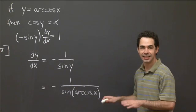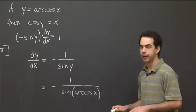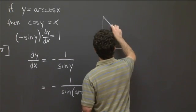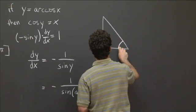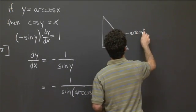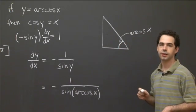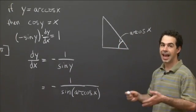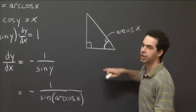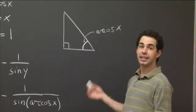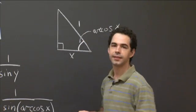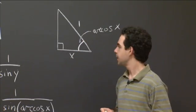So if you draw a right triangle and you make this angle arc cosine of x, well, that angle has cosine equal to x. So this is the right triangle. So its adjacent side over the hypotenuse is equal to x. And one easy way to get that arrangement of things is if this side is x and this side is 1.